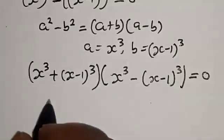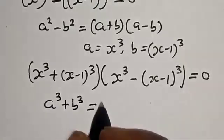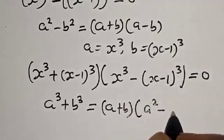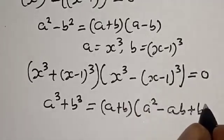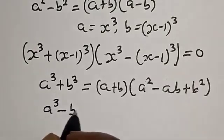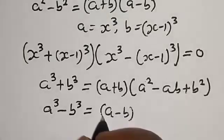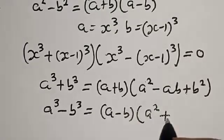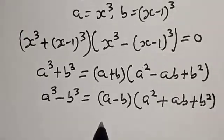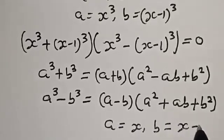Also take note of this rule: a raised to power 3 plus b raised to power 3 is equal to a plus b multiplied by a squared minus ab plus b squared. And a raised to power 3 minus b raised to power 3 is equal to a minus b multiplied by a squared plus ab plus b squared. In this case a is equal to x and b is equal to x minus 1.